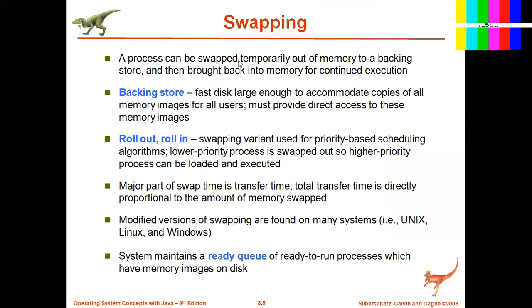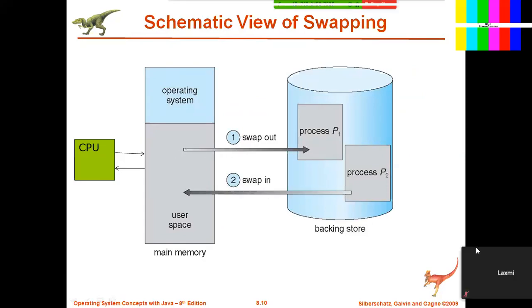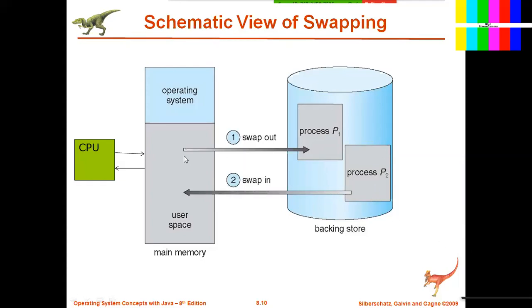Now one important topic: swapping. Swapping is interchanging contents from one place to another — we use this in day-to-day life, and here in memory management we use the same policy. The operating system sits in the first memory address and the remaining processes sit in the rest. When main memory is full and some other data wants to enter, whatever data is sitting in main memory has to be sent to secondary storage — the backing store.